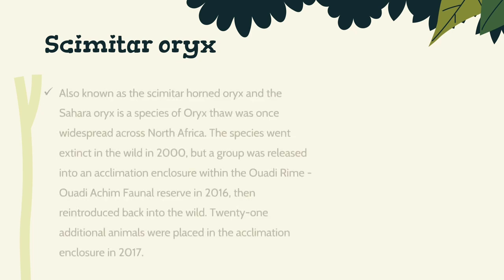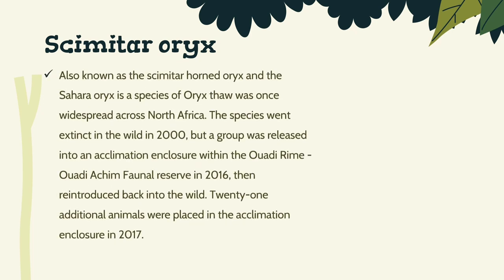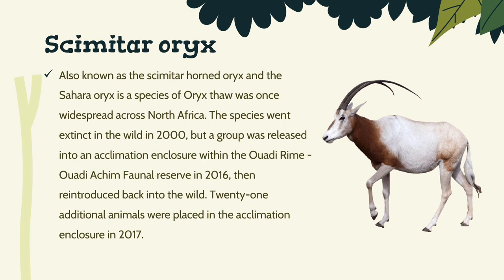Scimitar Oryx, also known as the Scimitar-Horned Oryx and the Sahara Oryx, is a species of oryx that was once widespread across North Africa. The species went extinct in the wild in 2000, but a group was released into an acclimation enclosure within the Wadi Rhim Wadi Achim Faunal Reserve in 2016. An additional 21 animals were placed in the acclimation enclosure in 2017, marking steps towards reintroduction back into the wild.